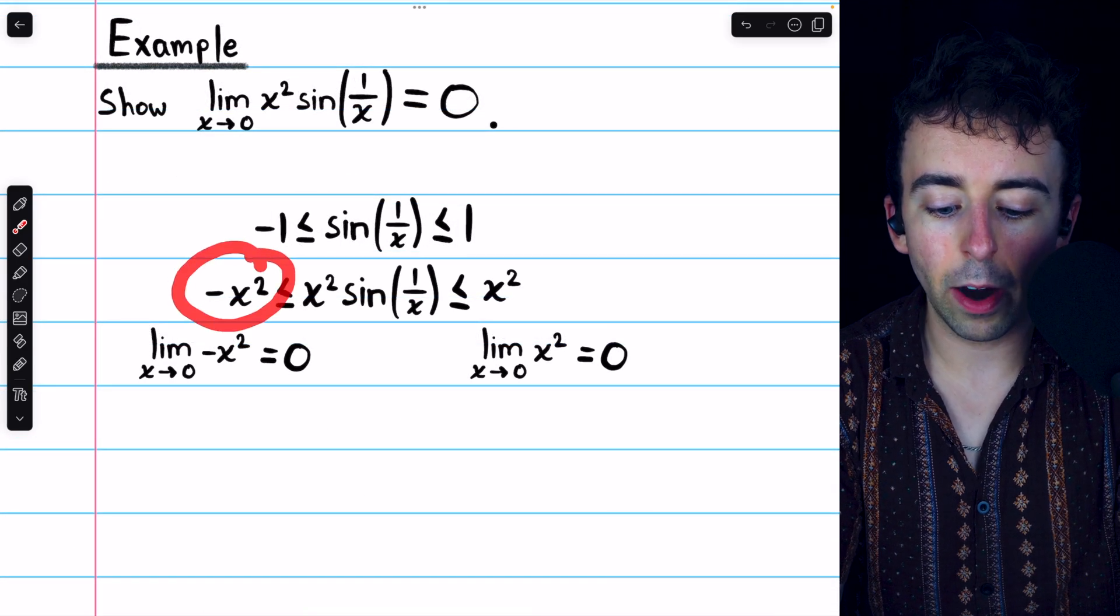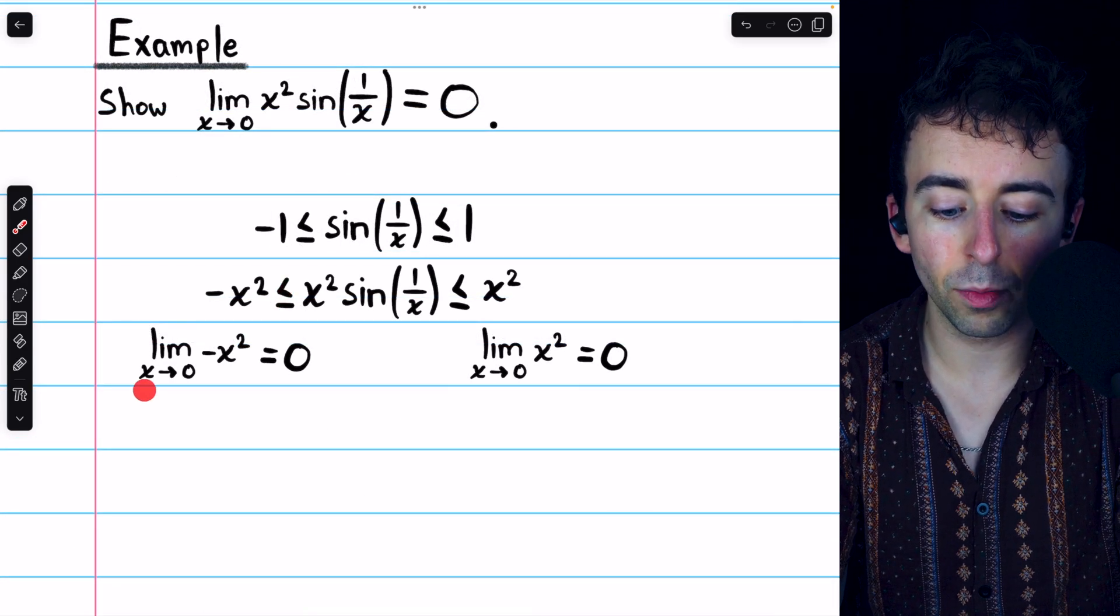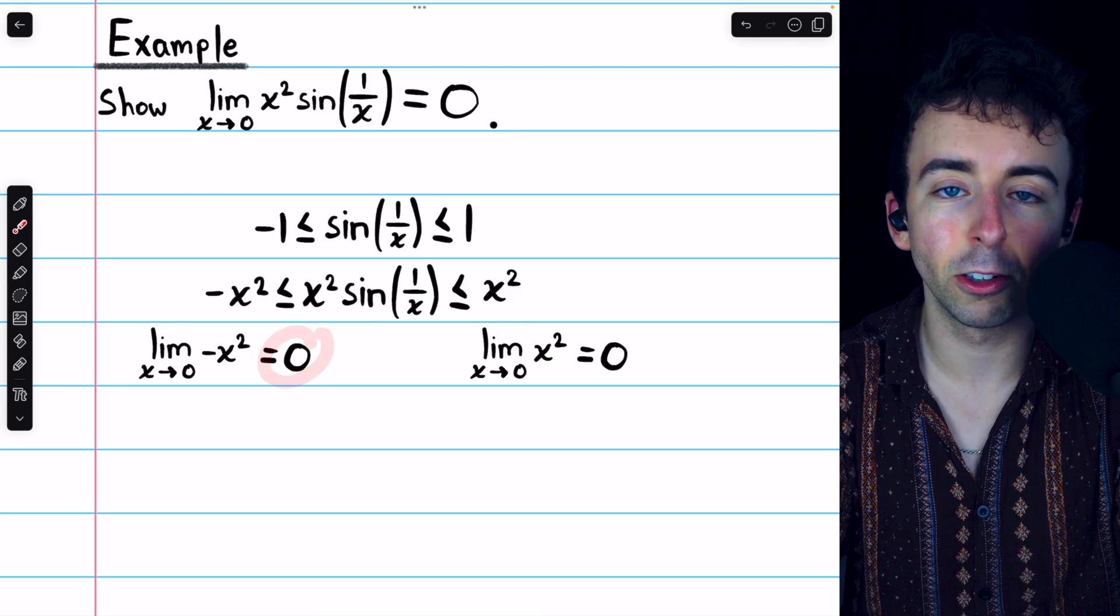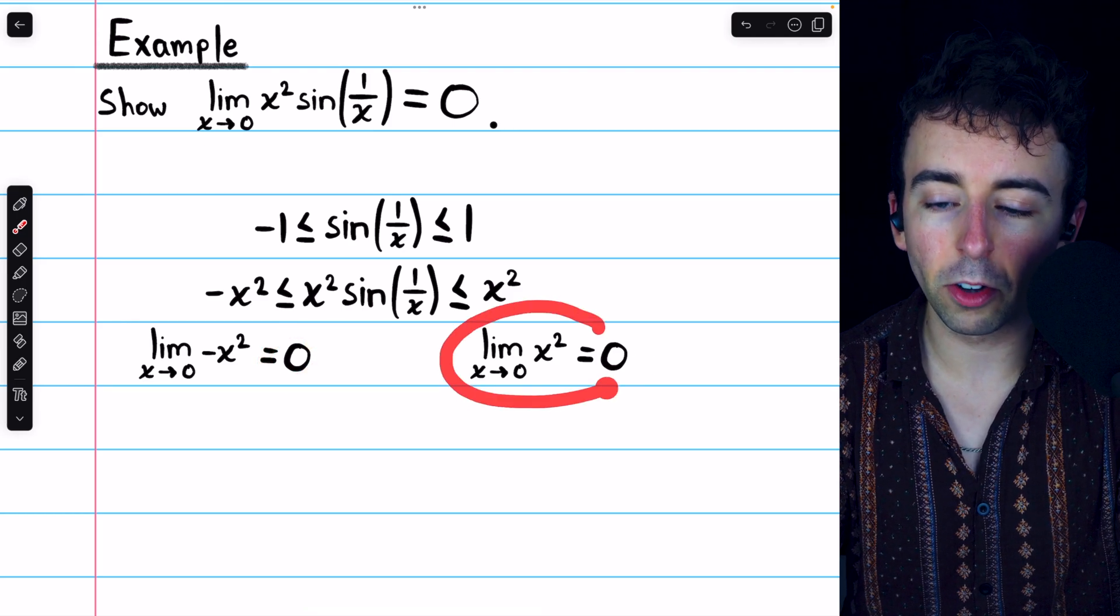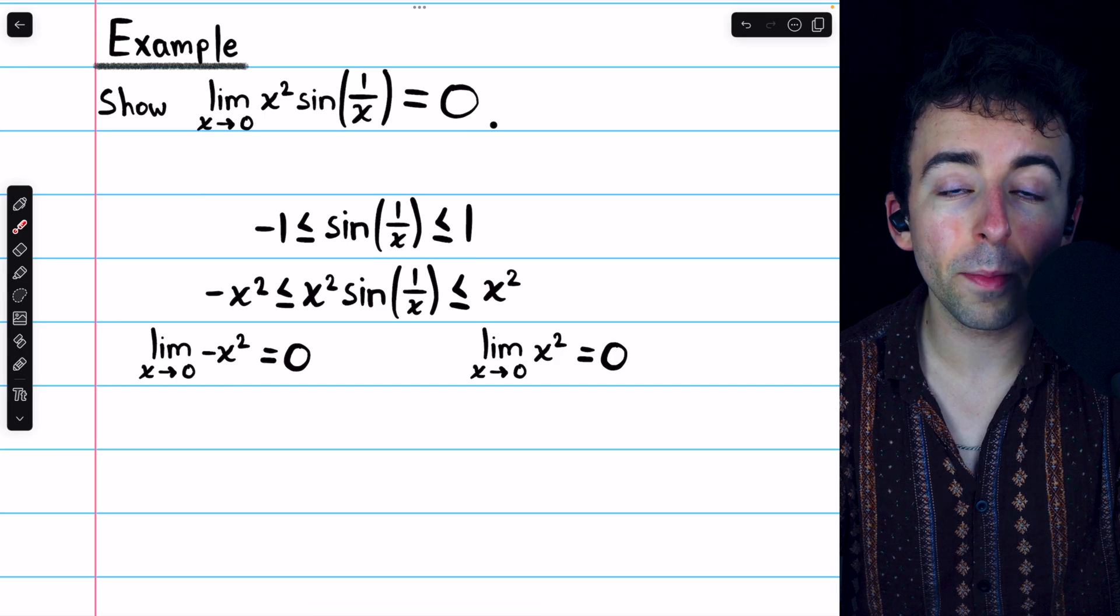That was part of the theorem. The limits of those lower and upper bounding functions, they have to exist and they have to be equal. Otherwise, the function g that lies between them would not be forced to share the same limit. The limit of -x², the lower function, as x approaches 0, is 0. You can just plug 0 in.